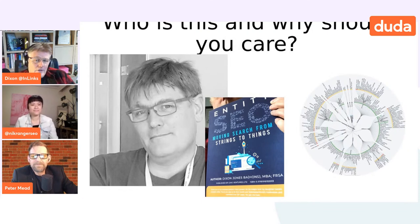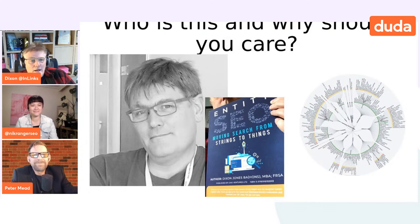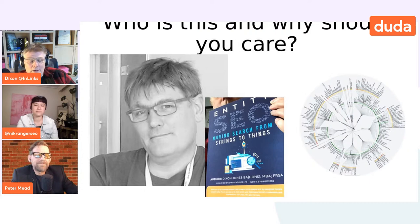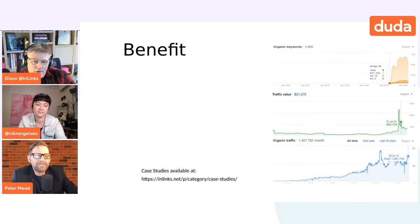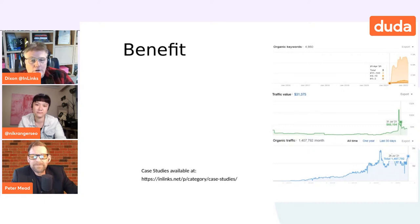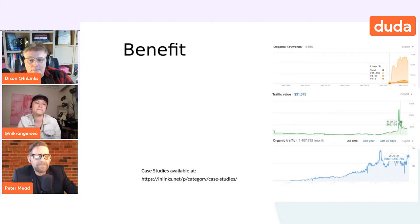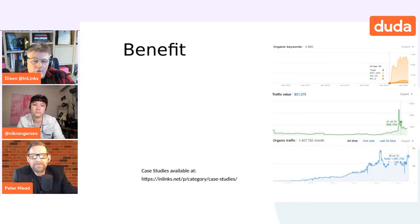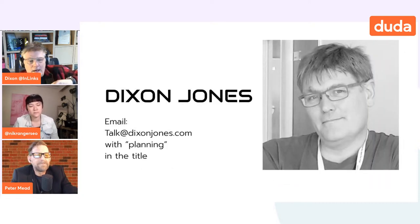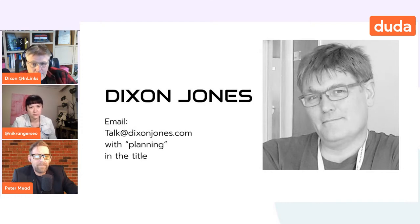The other thing that you haven't mentioned is I wrote a book, NCSEO: Moving Search from Streams to Things. It's not a very long book. If you can't afford the $2 on Kindle, most of it's free on the inlinks.net site. It's not out there for the money — it's out there for me trying to get these ideas down into print so I could understand them. These are a few graphs showing results from three different case studies, and if you send an email to Talk at DixonJones with 'planning' in the title, I'll send the slides through as well.